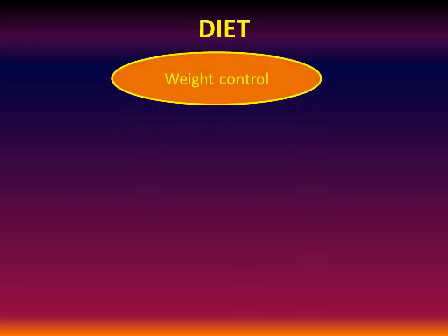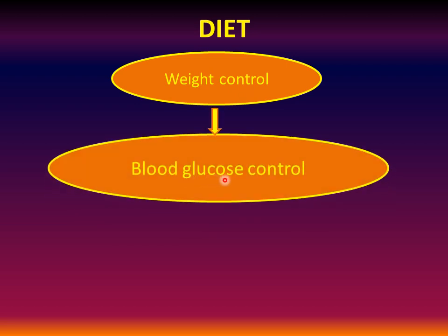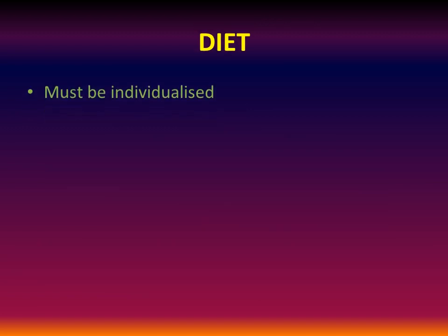Diet. Why is it essential for us to manage the diet in diabetes? If there is adequate weight control, there is good blood glucose control, and good blood glucose control prevents the short and long-term complications of diabetes. The diet of every person must be individualized. This video is not regarding a diet plan, but basically about the items which people can eat and which cannot be eaten by diabetics.